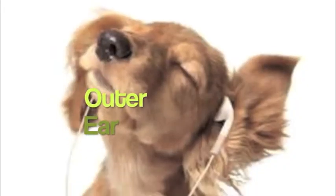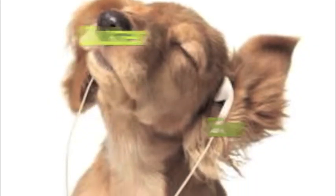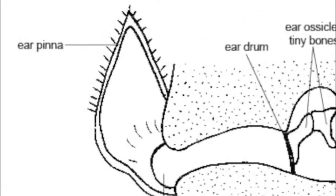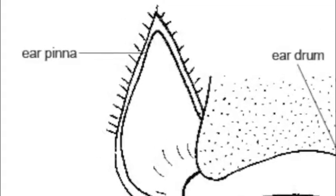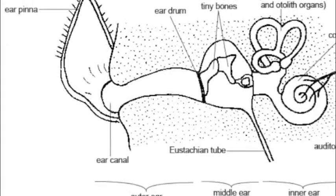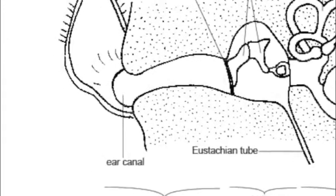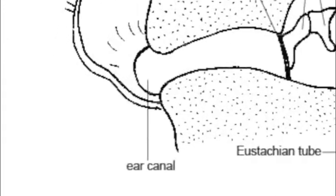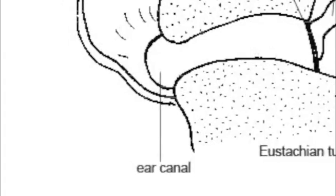The outer ear consists of the pinna, which catches sound waves and transmits them into the ear, and the external auditory canal, which transmits sound into the internal auditory canal.